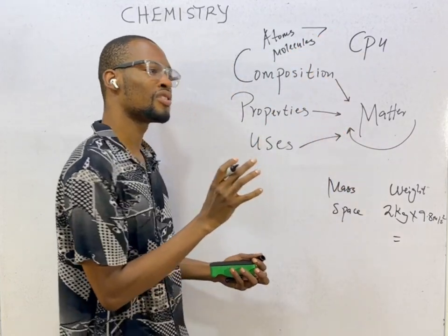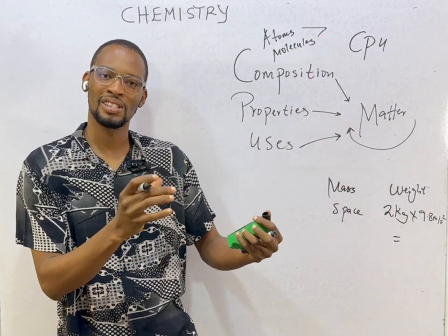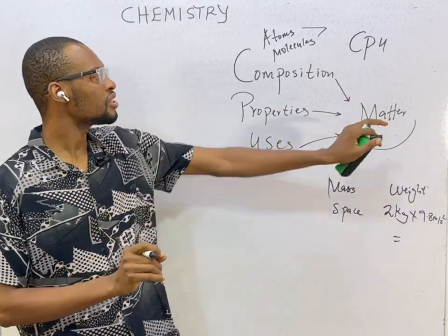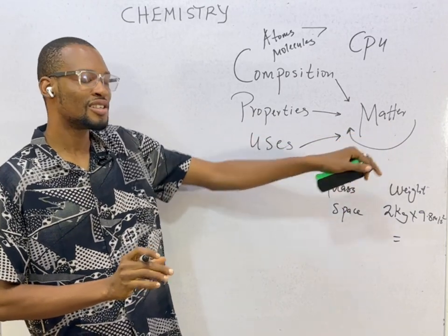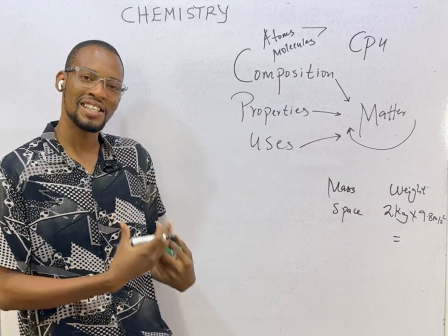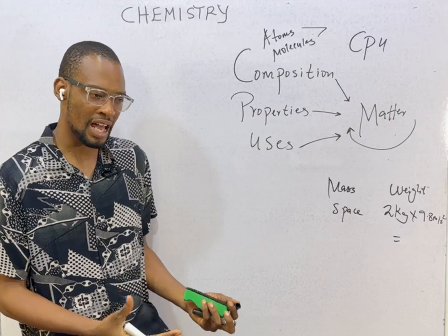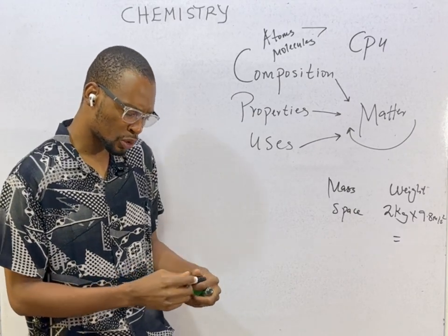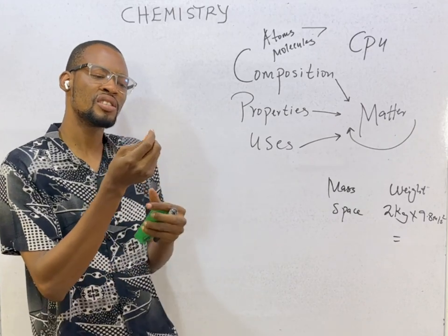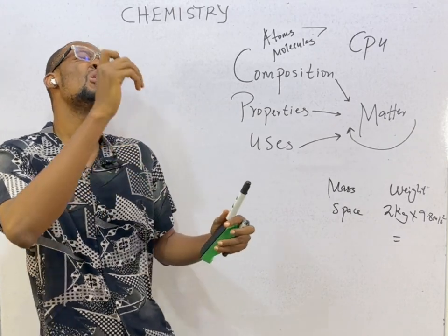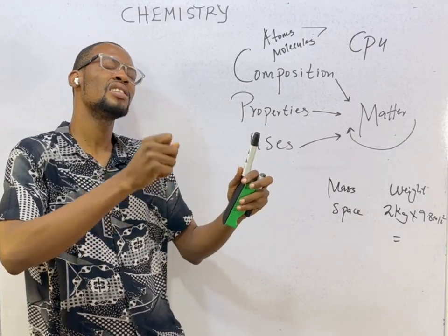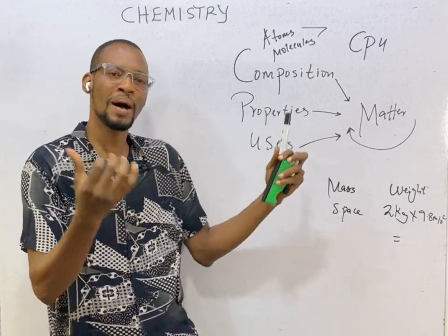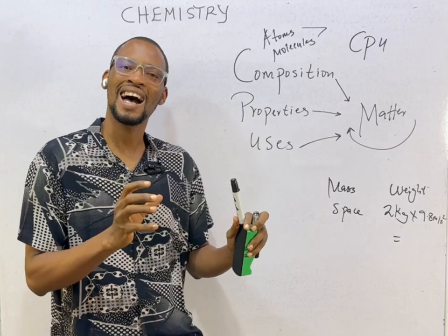Atoms and molecules are the composition of matter. Just as a cell is the unit of life, the unit of matter is the atom. If you break matter down into smaller particles, the smallest, simplest, tiniest, and indivisible particle of that matter is referred to as an atom.